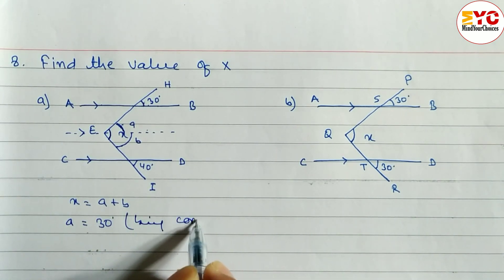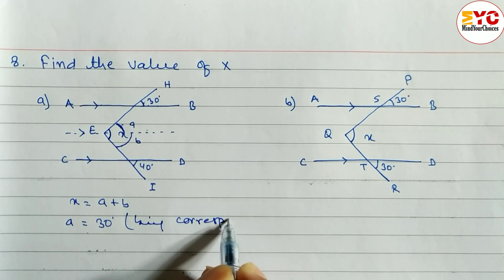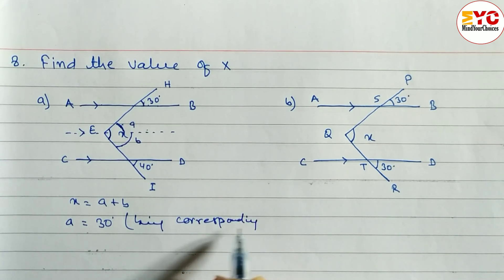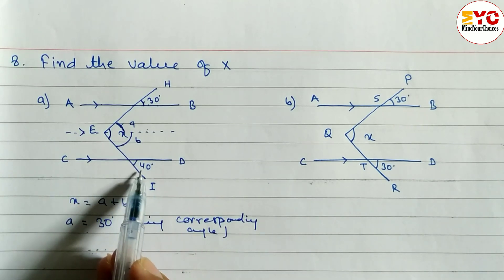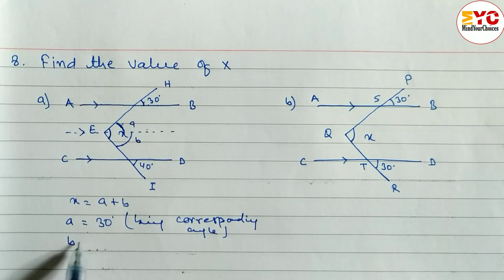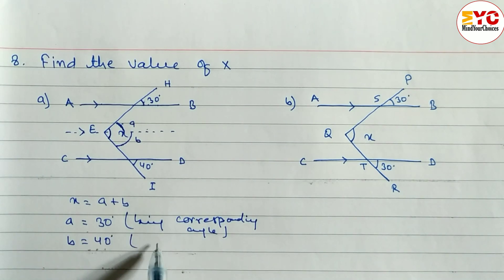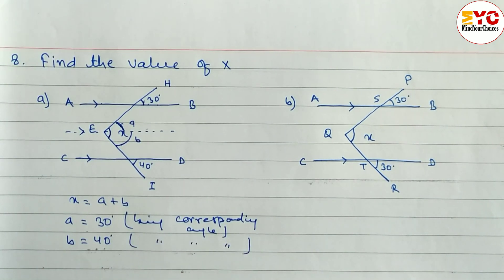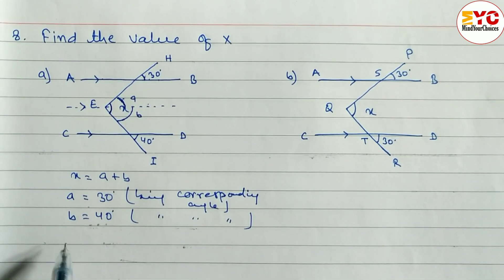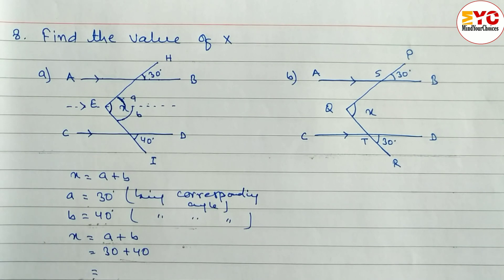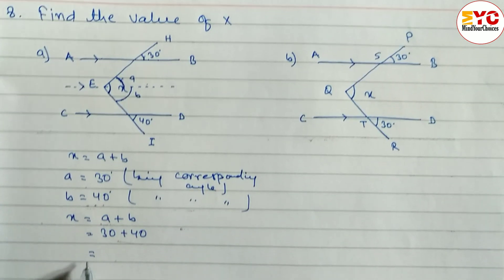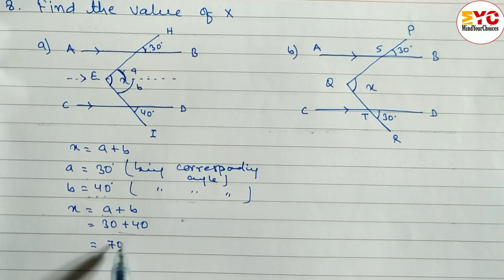Reason: being corresponding angle. Similarly, to find out the value of B, B is equal to 40 degrees. Reason: being corresponding angle — one is inside, one is outside of the parallel lines. After that, what is the value of x? x is equal to A plus B. Value of A is equal to 30 and value of B is equal to 40. When you add, we get 70 degrees. So value of x is equal to 70 degrees.